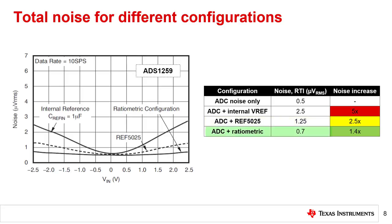Comparatively, the ratiometric configuration only increases the total noise by 40% at full scale.